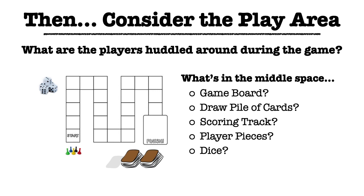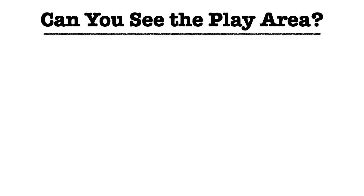So if we look at Monopoly, we've got the board, a bank of money, a set of deeds in front of each player with their own pile of money, some tokens, some dice. We know players sit around a table with the content in the middle. By having a better sense of where they're playing and how that area is set up, we get a better sense of what materials we'll need and what this game is going to look like while it's being played.